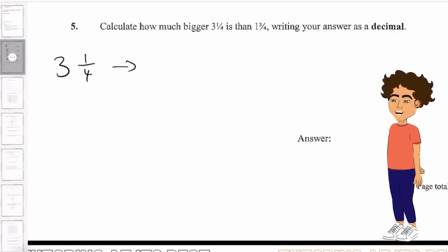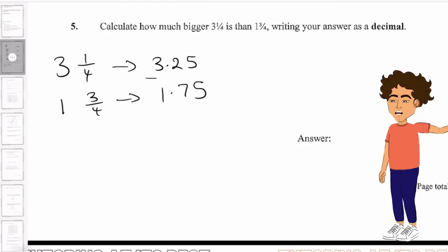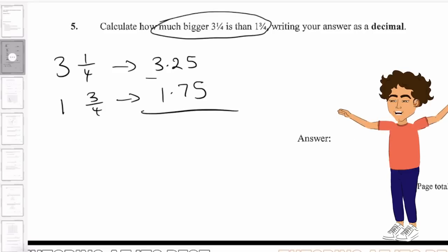We'll take 3 and 1/4, and that gives us 3.25. We will then have 1 and 3/4, which will give us 1.75. And then we can subtract it as they are looking to find out how much bigger one is from the other.